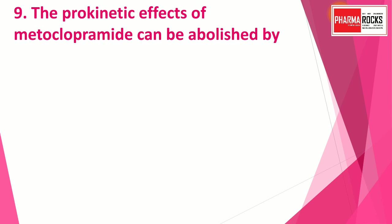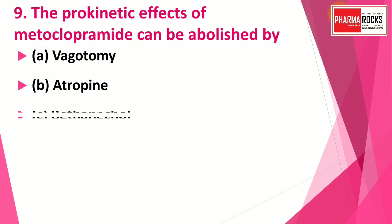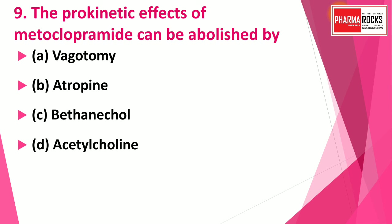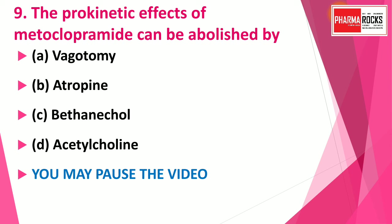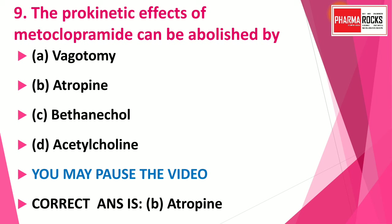Ondansetron has the ability to prevent emesis due to radiation, meaning alpha, beta, and gamma radiations can induce vomiting which ondansetron can prevent. Question number nine: The prokinetic effect of metoclopramide can be abolished by — option A: vagotomy; option B: atropine; option C: bethanechol; option D: acetylcholine. The correct answer is option B — atropine. The prokinetic effect of metoclopramide can be abolished by atropine.